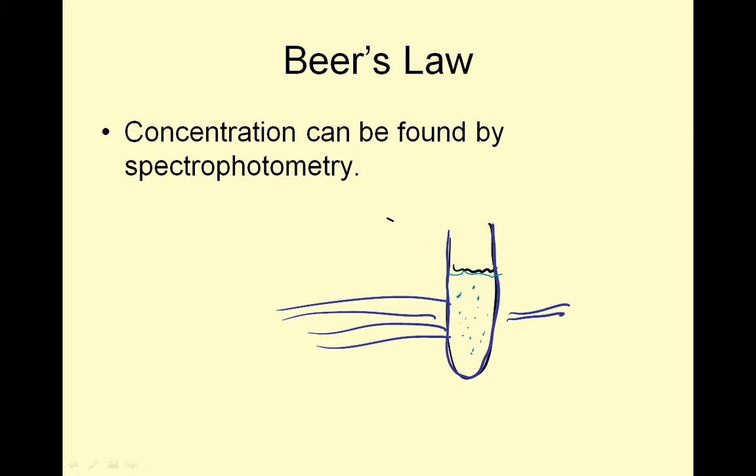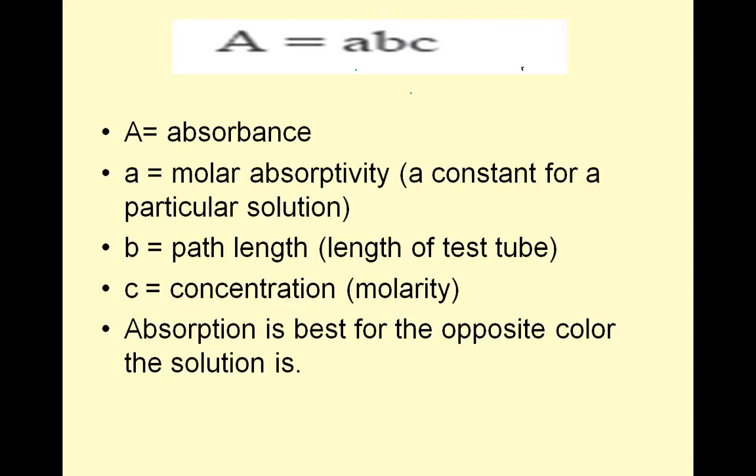You shoot light through here and some of the particles will make it through. Let's take a look at the formula: A equals ABC. A equals absorbance, little a equals molar absorptivity (a constant for a particular solution), B is path length (the width of the test tube), and C is concentration, which is molarity.